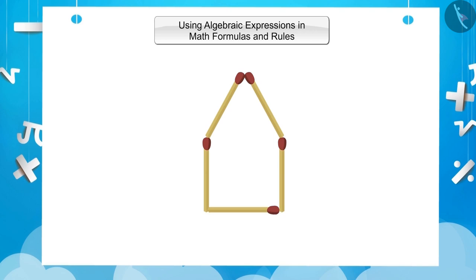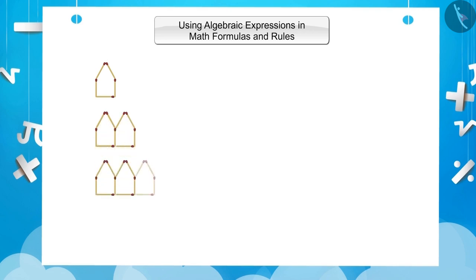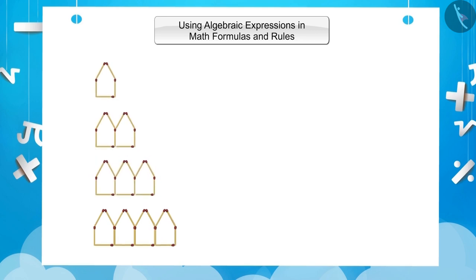As you can see here, the first shape is in the form of a heart made of five math sticks. By adding four math sticks to it, we can get two hearts. Similarly, on adding four more math sticks, we can create another hut. There are five math sticks in the first hut, nine in the second, thirteen in the third, and seventeen in the fourth.